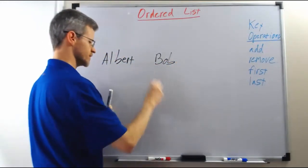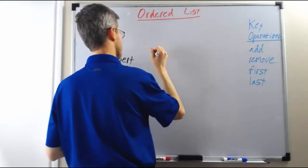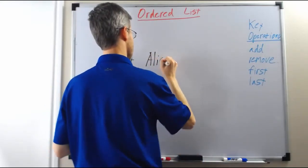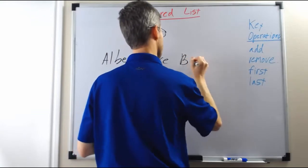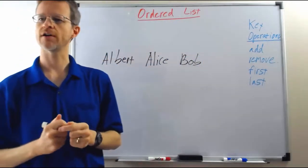Alice of course is going to go here between Albert and Bob, so somehow the underlying implementation is going to put Alice in between Albert and Bob, and now this is what our list looks like.